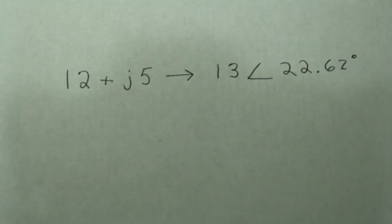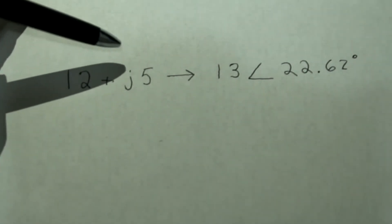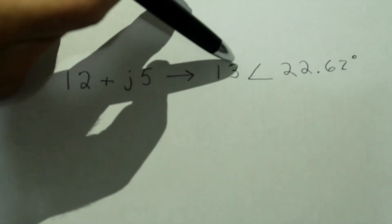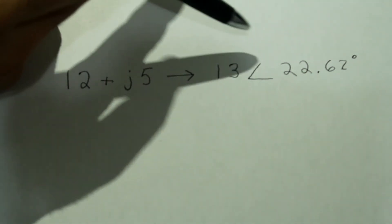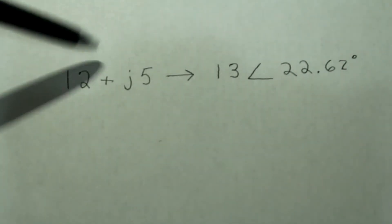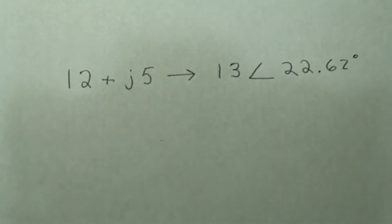Now we're actually going to go ahead and start using the calculator to convert between rectangular and polar. And the example we're going to use is 12 plus j5. And the polar form for that would be, the radius would be 13 and the angle would be 22.62 degrees. So we're going to go both ways. We're going to go from rectangular to polar, and we're going to go from polar to rectangular.